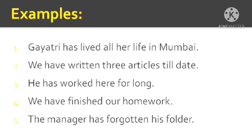We have written three articles till date — till date means as of now. The action started in the past, continued for some time, and now you have completed three. Maybe you are going to write a few more. 'We' is first person plural, so 'have' is used. 'Written' is the V3 of 'write'. Since we have used 'have' and the past participle form, this is the present perfect tense.